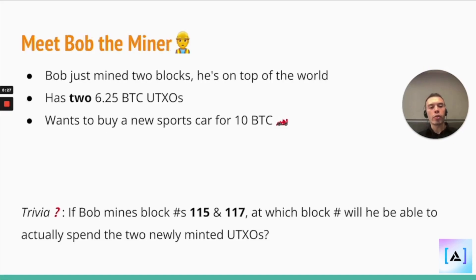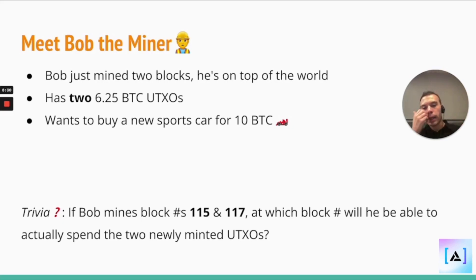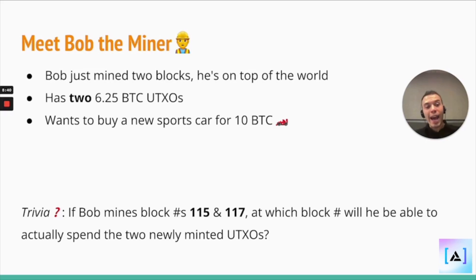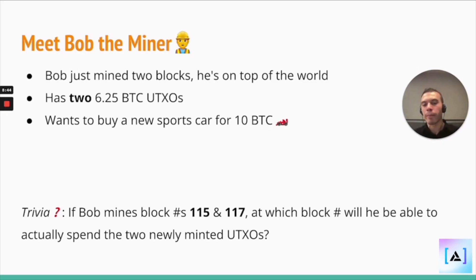So let's just go through this quick example. Say Bob just mined two blocks — he's on top of the world. Since he mined two blocks, the current Bitcoin block reward is 6.25 Bitcoin as UTXOs. So if you mine a block, you get one UTXO worth 6.25 Bitcoin.